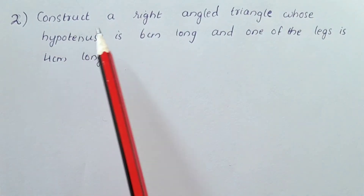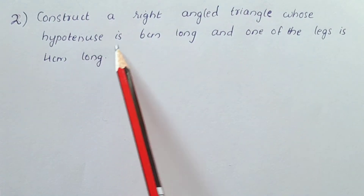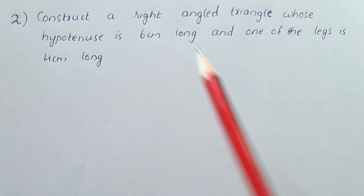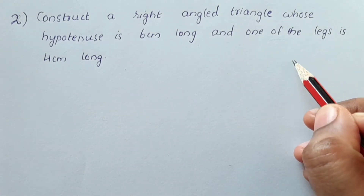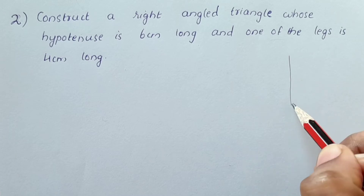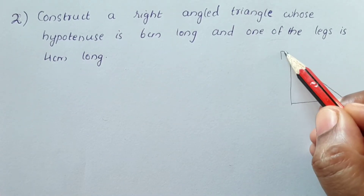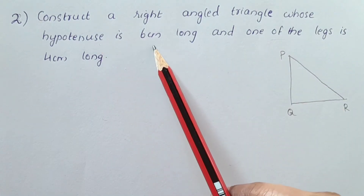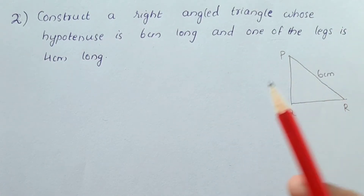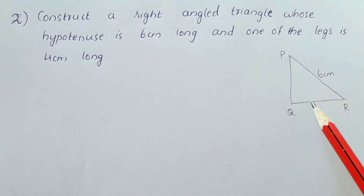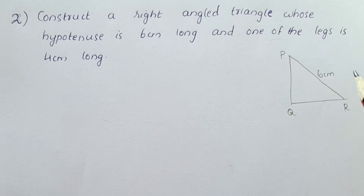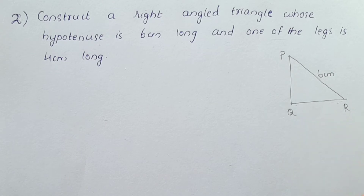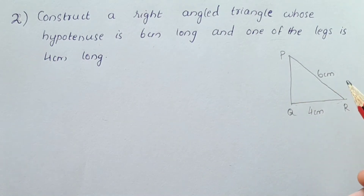Second question: construct a right-angle triangle whose hypotenuse is 6 centimeters long and one of the legs is 4 centimeters long. Let's get a sketch — name it P, Q, R. Hypotenuse PR is 6 centimeters and one leg is 4 centimeters. Now let's construct a right angle here.